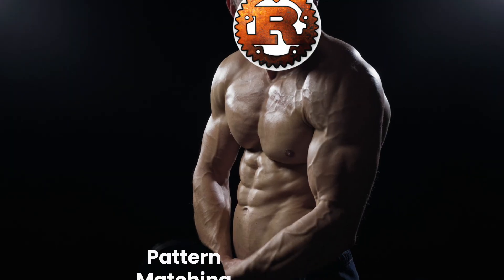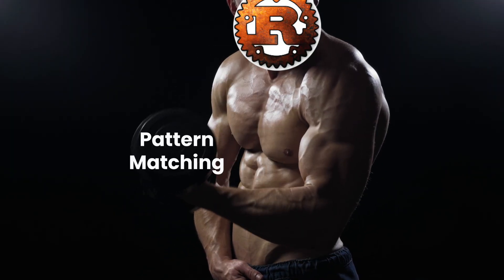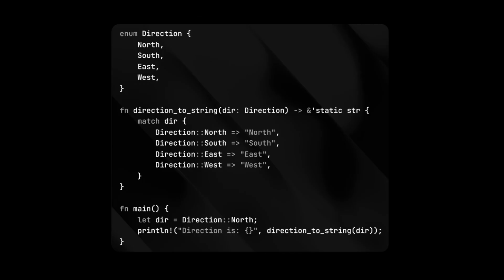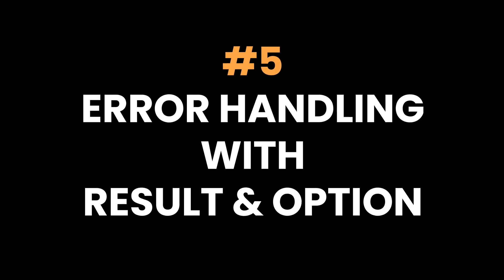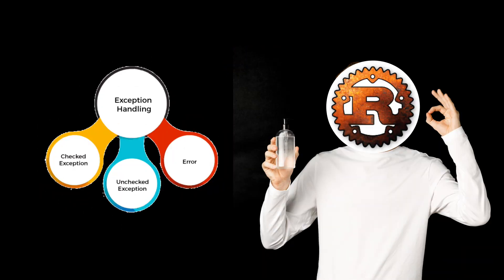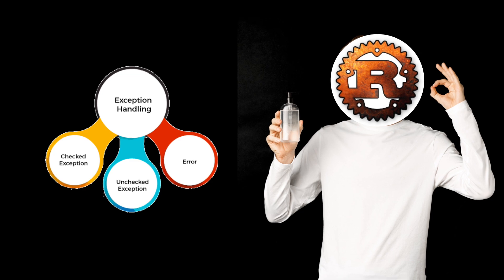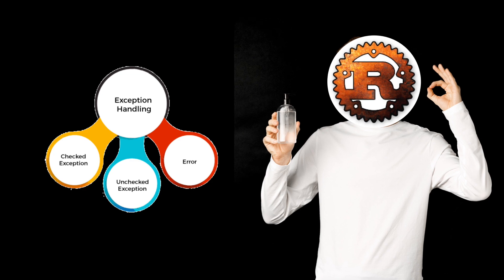Four: pattern matching and enums. Pattern matching in Rust is incredibly powerful. Combined with enums, you can write clear, exhaustive logic that covers all possible cases. It's especially useful for error handling, where enums like Result and Option help manage outcomes explicitly and avoid unhandled exceptions.